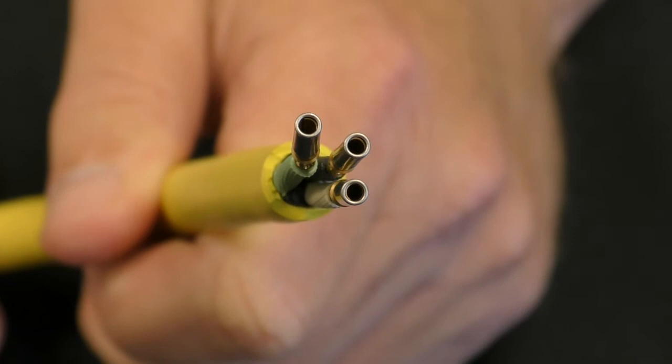TPC stocks many common configurations of our mini quick connect cord sets in 10, 12, 14 and 16 gauge sizes, male and female, straight and 90 degree with mating receptacles.